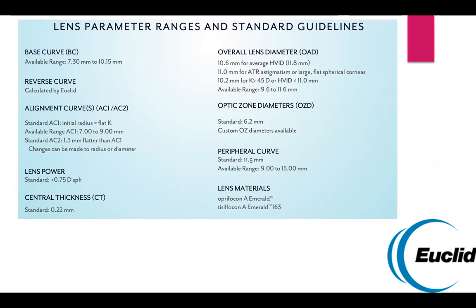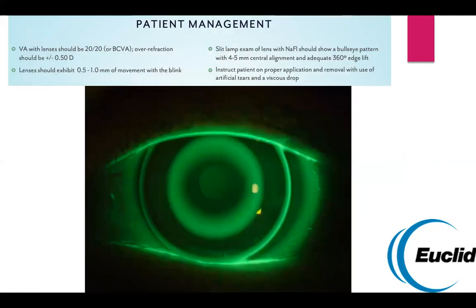The range of parameters for the Euclid Emerald lens is impressive: base curves between 7.3 and 10.15, three different diameters for all different shapes and sizes of eyes, different curvatures, and different materials — all with very high Dk. Remember these lenses are worn overnight, so breathability is important to reduce infection risk. You want a bullseye pattern with four to five millimeters of central alignment and adequate 360-degree edge lift. Visual acuity with the lenses on should be 20/20, overfraction should be plus or minus a half diopter, and lenses should move about half to one millimeter with blinking.